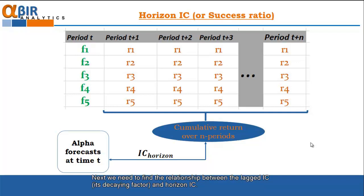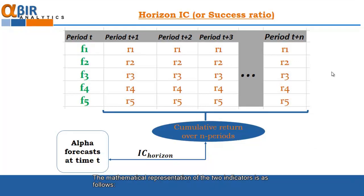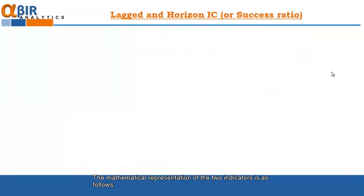Next, we need to find the relationship between the lagged IC and its decaying factor and also the horizon IC because using this relationship we can find our optimal investment horizon for our portfolio. The mathematical representation of the two indicators is as follows.